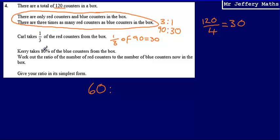It says here that Kerry is taking 80% of the blue counters. Now there are 30 blue counters, so we're going to calculate 80% of 30.